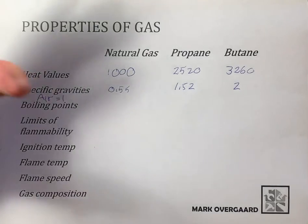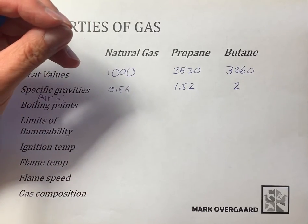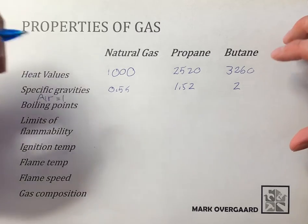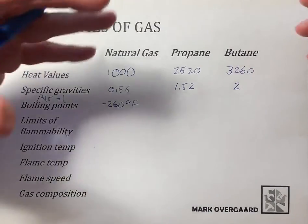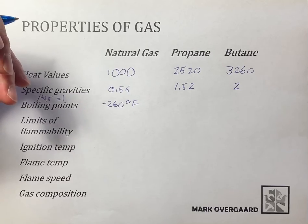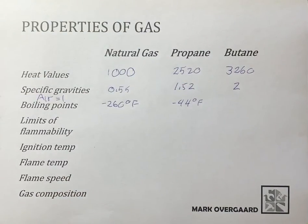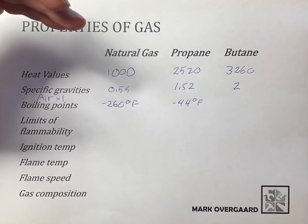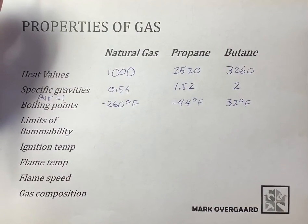Boiling points — where does each gas go from a liquid to a vapor? Water, for reference, boils at 212°F or 100°C. For natural gas it's at negative 260°F, which means natural gas is almost always in a vapor state wherever we find it — it only becomes liquid below negative 260°F. Propane changes over at minus 44°F, so in very cold conditions propane can struggle to vaporize. Butane is 32°F, so above freezing it's a vapor; below freezing it stays liquid.